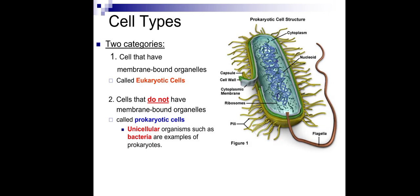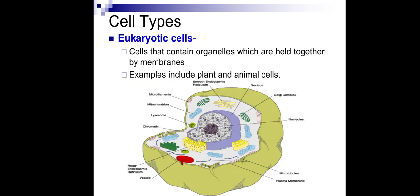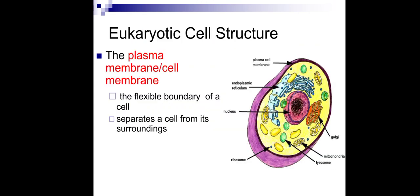Inside the prokaryotic cell there is naked DNA or nucleoid, with no nucleus and no membrane-bound organelles — it is a very simple kind of cell. Another type of cell is the eukaryotic cell: cells that contain all the organelles held together by membranes. There are two types of eukaryotic cells: plant cell and animal cell. The eukaryotic cell has a plasma membrane or cell membrane, which is the flexible boundary of a cell.